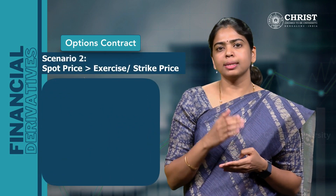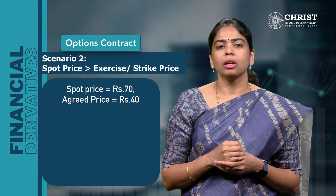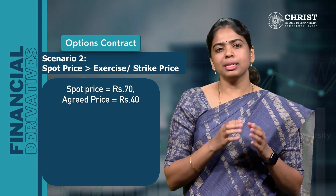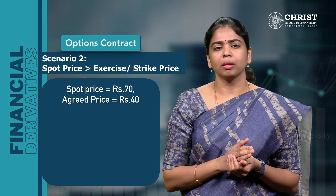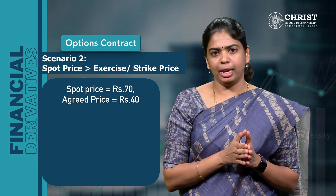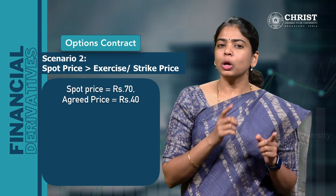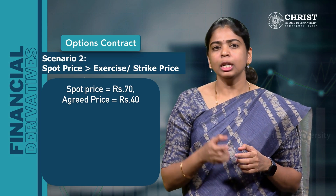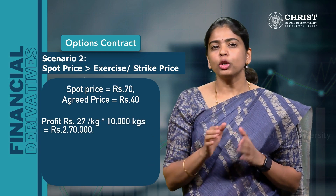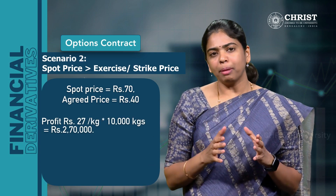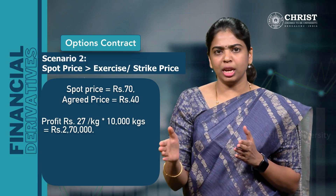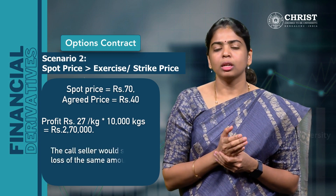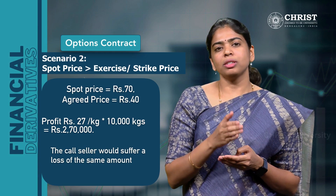Now let us consider scenario 2 wherein the spot price is greater than the strike price. What if the spot price on expiry is ₹70 per kg and the agreed strike price is ₹40 per kg? This situation favors the buyer of the underlying asset. Therefore, the call option buyer — the ketchup manufacturing company — would demand the call seller — the trader — to fulfill the contract. Thus, the call buyer would enjoy a profit of ₹27 per kg into 10,000 kg, which equals ₹2,70,000. The call seller would suffer a loss of the same amount.